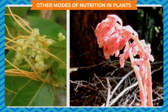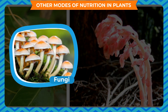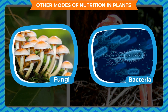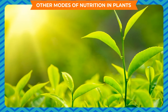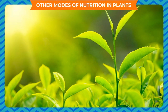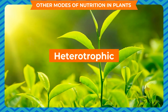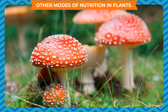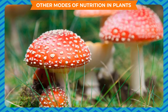Other modes of nutrition in plants — heterotrophic nutrition: non-green plants such as fungi and bacteria cannot prepare their own food as they do not have chlorophyll. They depend directly or indirectly on green plants for their nutrition. This mode of nutrition is called heterotrophic nutrition, and such organisms are known as heterotrophs.